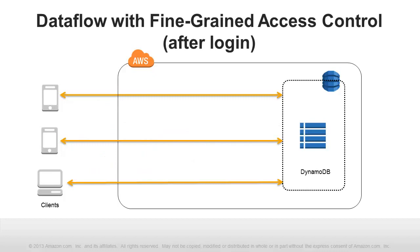Now here's how access control works in a similar application built using fine-grained access control. After being authenticated by an identity provider, each client makes requests directly of DynamoDB, and fine-grained policies govern whether each request is allowed or denied. Fine-grained access control is designed to allow you to keep users' data secure with significantly less development overhead, management overhead, and cost.